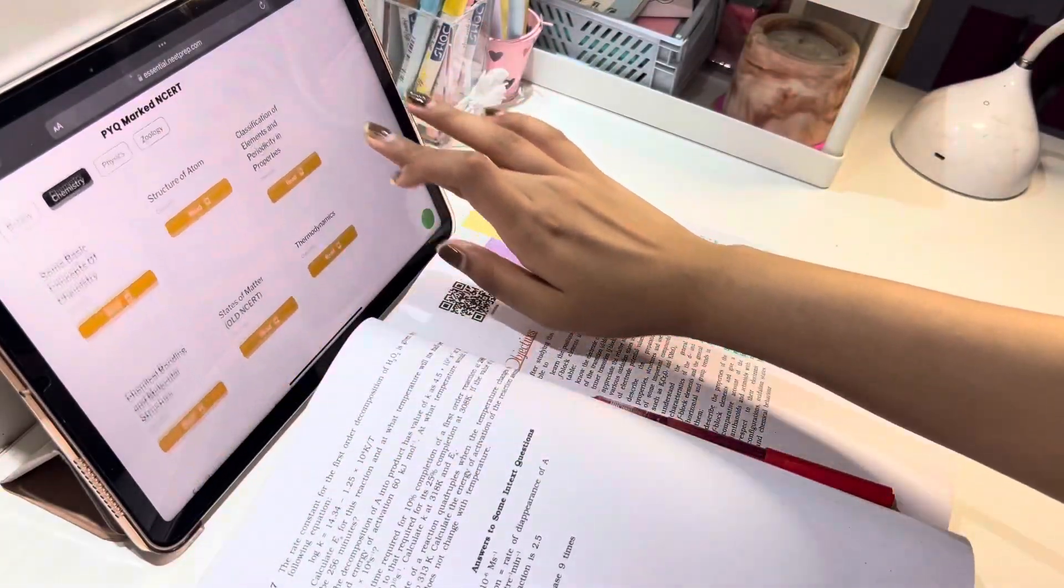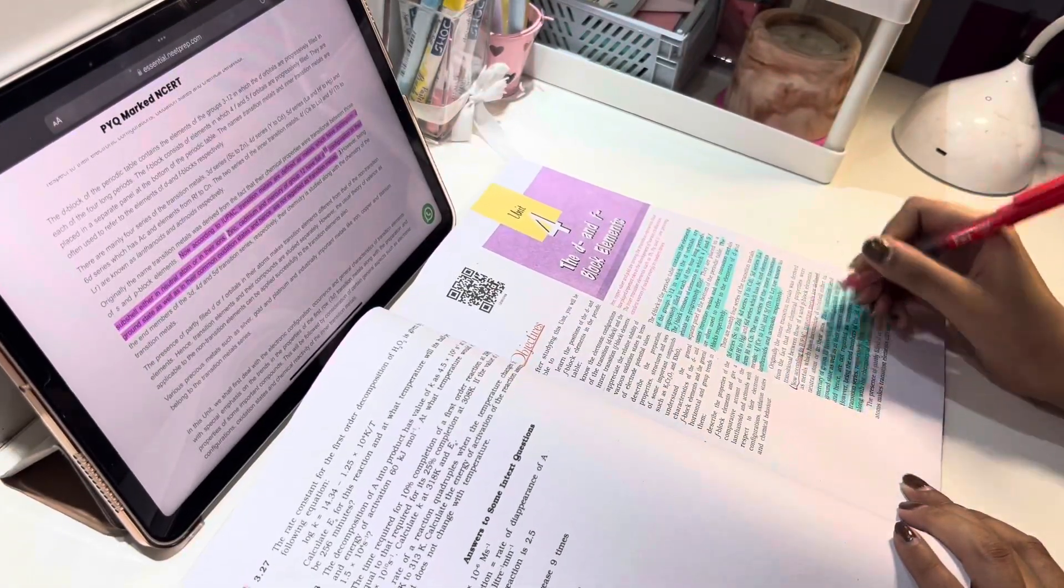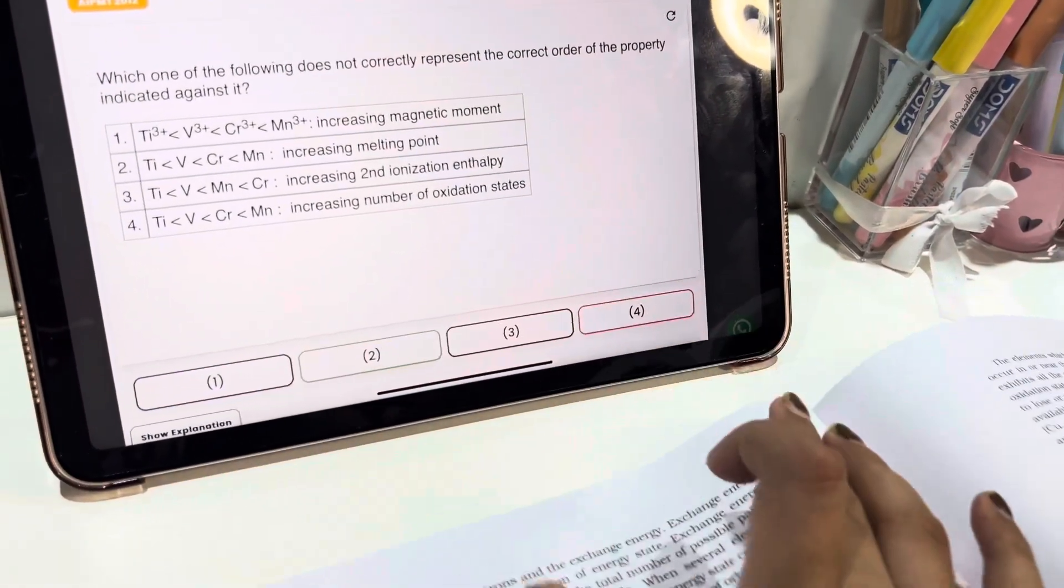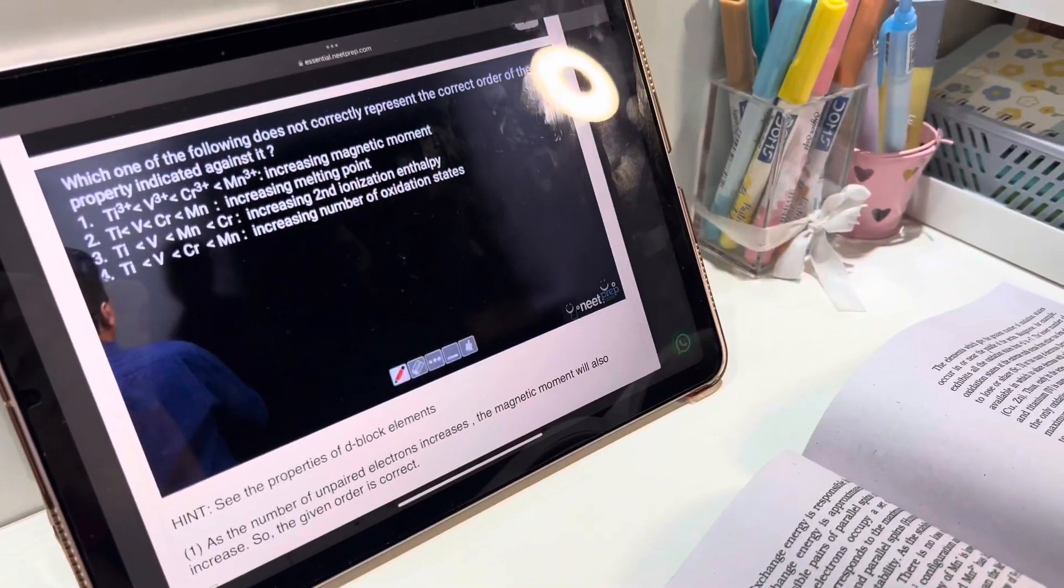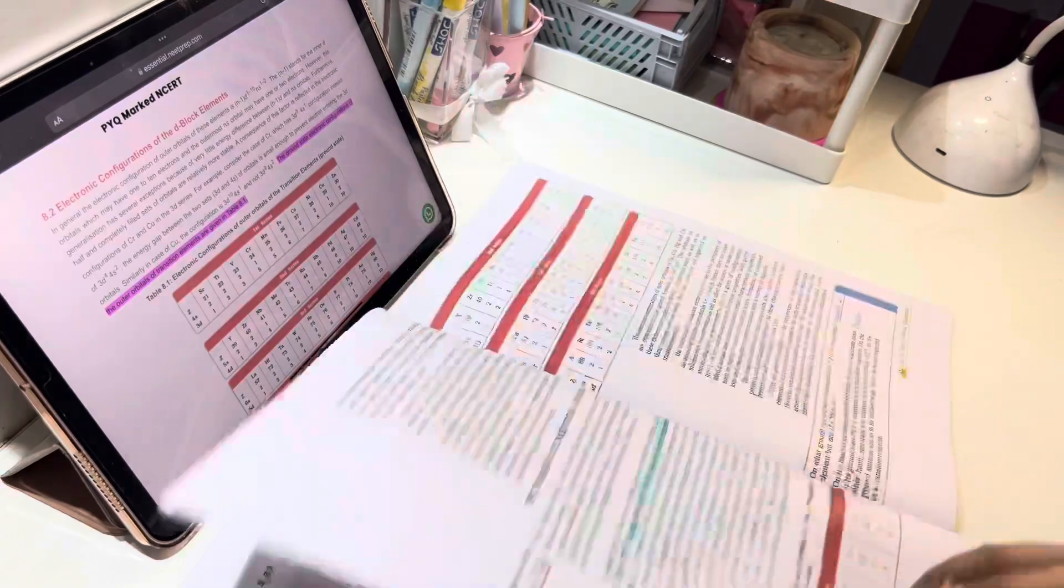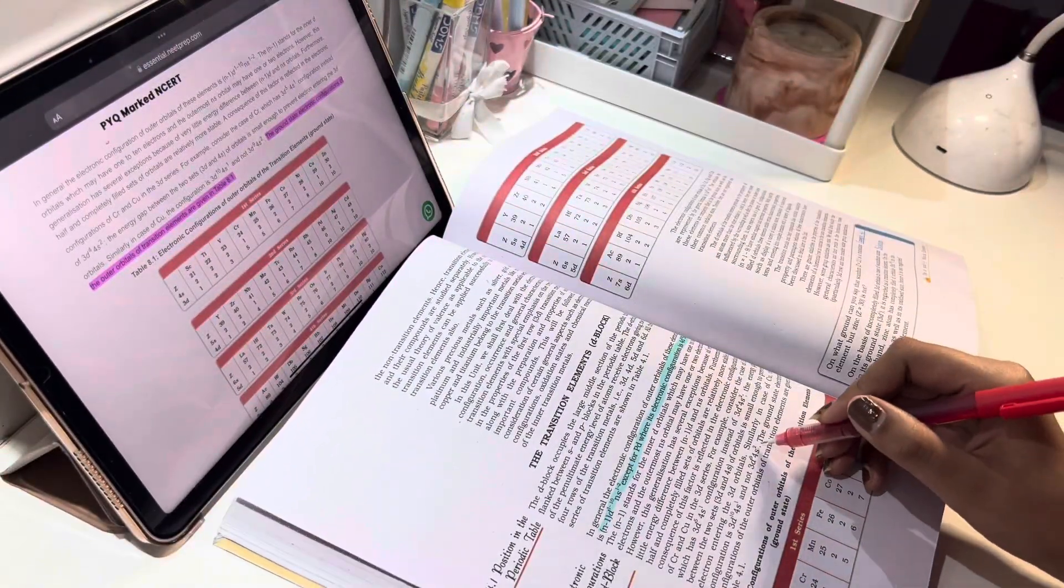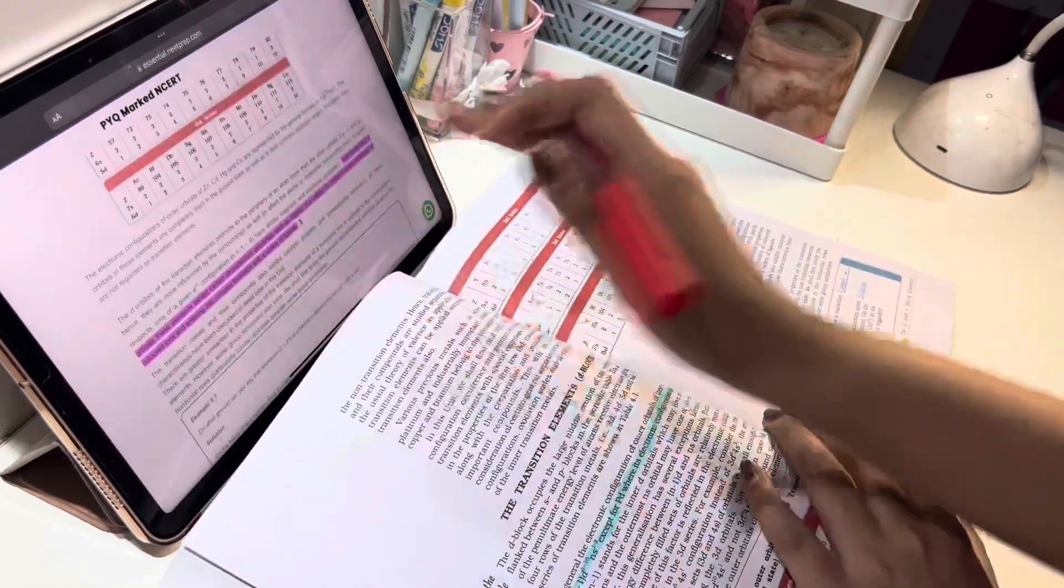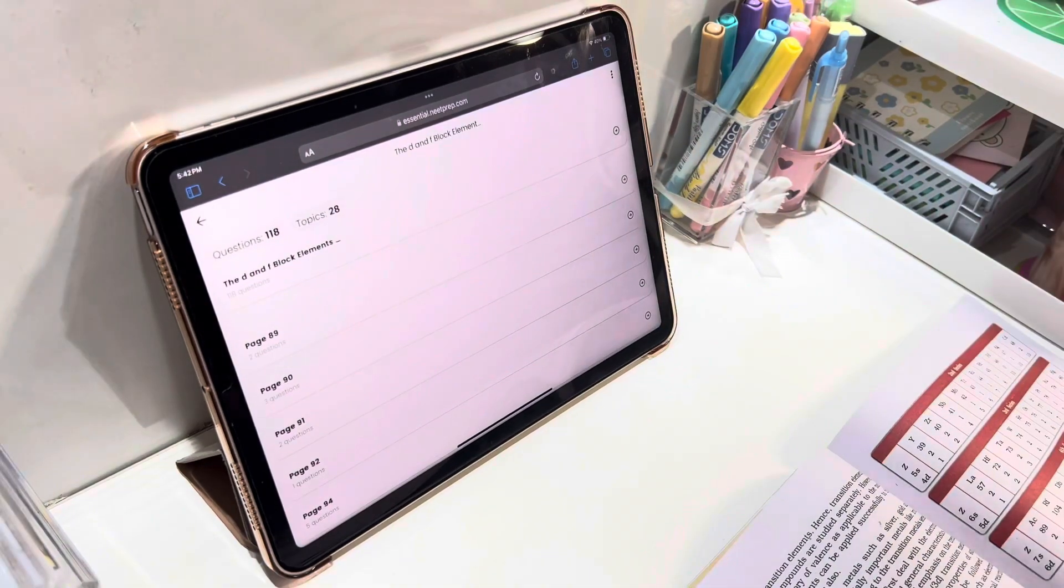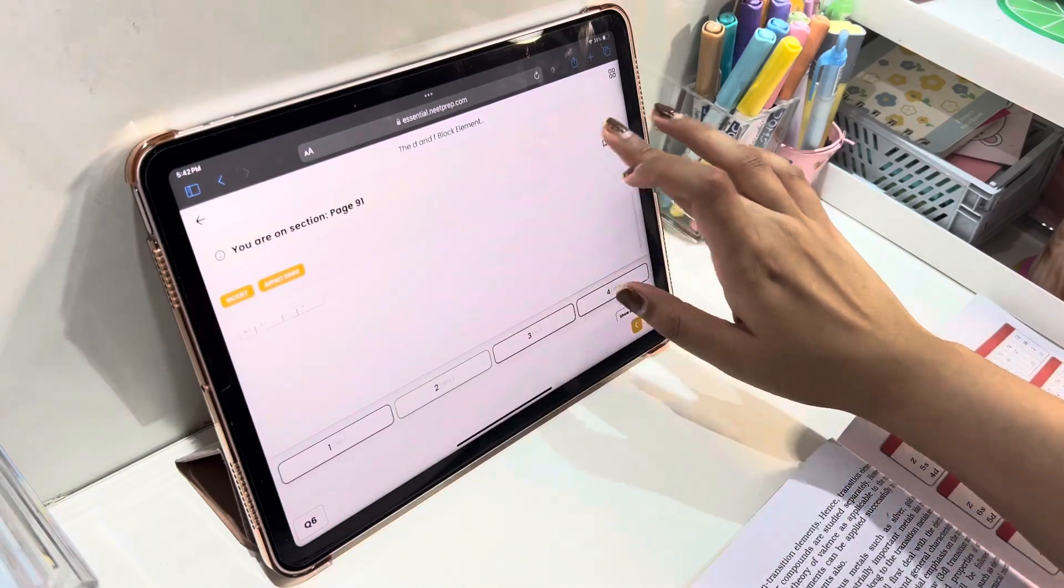So, guys, I'm using PYQ-marked NCERT from NCERT Abhyaas Path, which is 4 subjects PYQ-marked NCERT. And if you click on the highlighted line, you can also see the PYQ-marked NCERT and you can also solve it there. And if you don't have questions solved, then you can see the video explanation and clear your doubts with it. And personally, if I tell you, it's very important to my PYQ-marked NCERT. I have used it in almost every chapter.